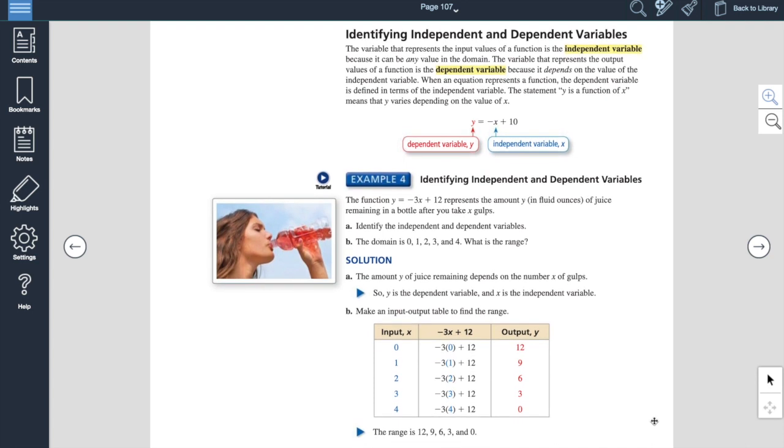Then again, we talk about independent and dependent variables. Independent variable is your x. So x, independent, domain, all mean the same thing. The output is your y values. That is your dependent variable. So your dependent is the y or the range. Your independent is the x or your domain.